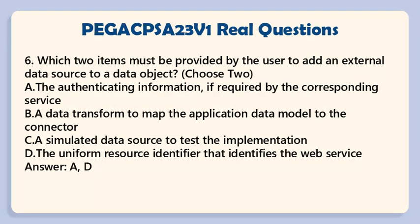Question 6: Which two items must be provided by the user to add an external data source to a data object? Choose two. a. The authenticating information, if required by the corresponding service. b. A data transform to map the application data model to the connector. c. A simulated data source to test the implementation. d. The uniform resource identifier that identifies the web service. Answer: a, d.